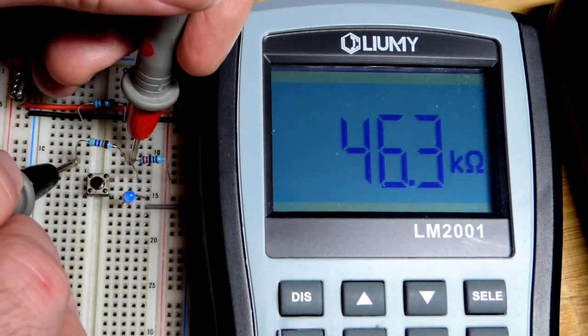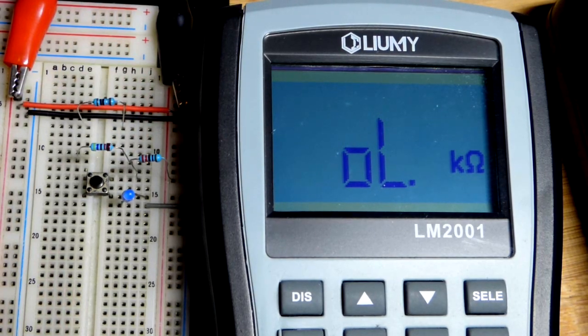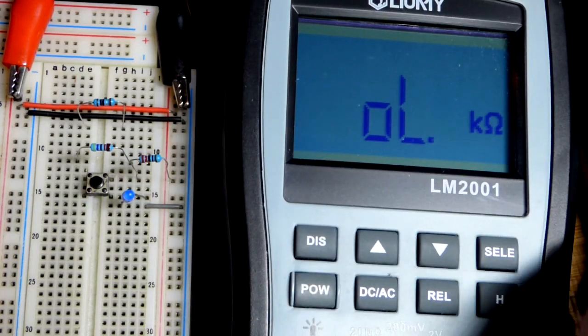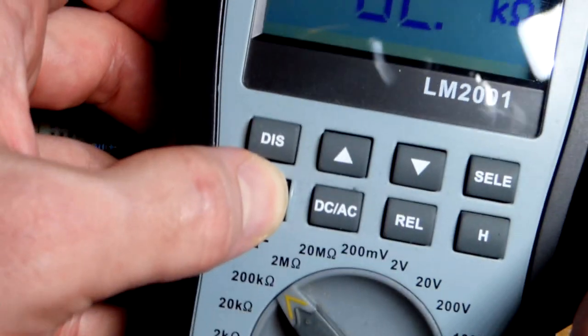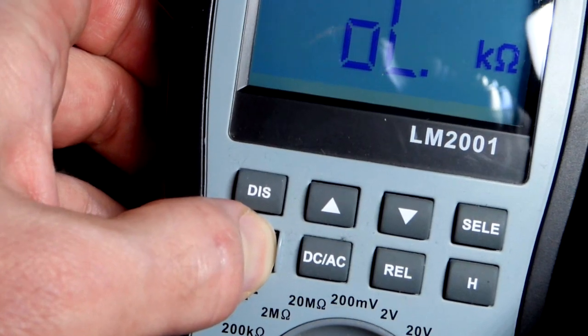So that's 46,300 ohms right there. Pretty simple, even with a ranged meter. A couple things: make sure you turn the power off when you're done.